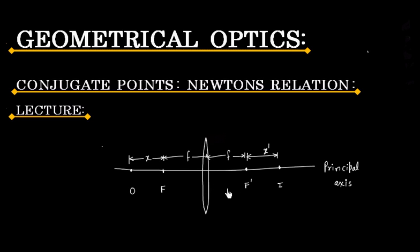Suppose that an object at point O in front of a lens has its image formed at I. So O is object and I is image.